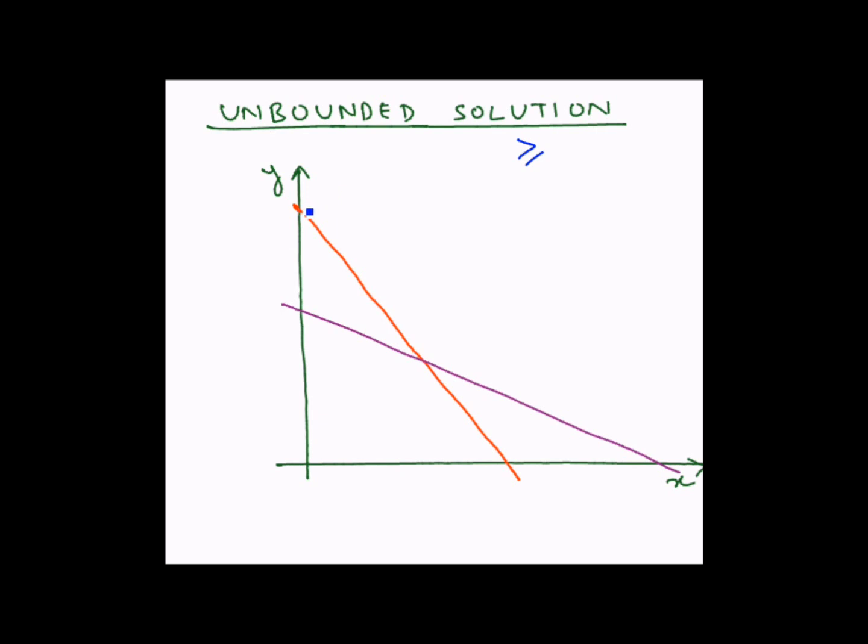So this will be the feasible solution region for this LP solution, which is nothing but all the points of x and y above the edges OA and B.